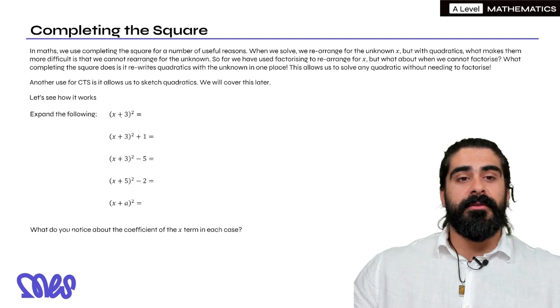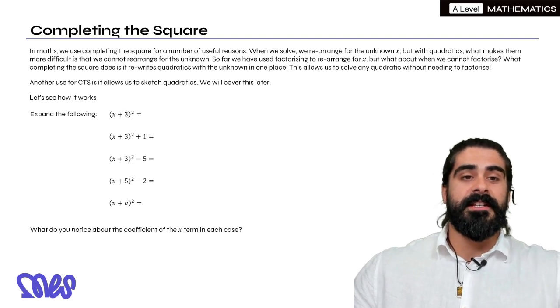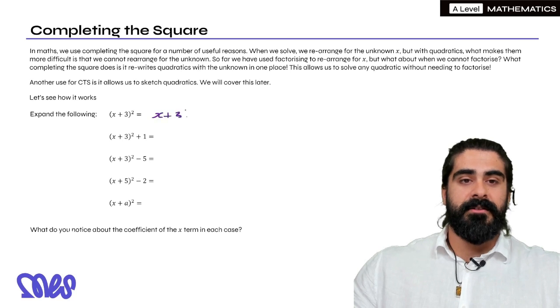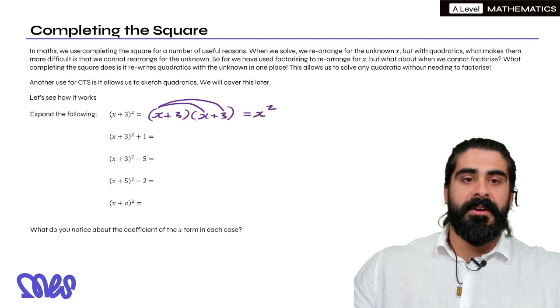So the first skill, which we should be very used to, is expanding brackets. So if I took X plus 3 squared, that's like rewriting the bracket twice. Then we have X times X, X squared. Then we have 3X, another 3X which gives us 6X, and then we've got 9.